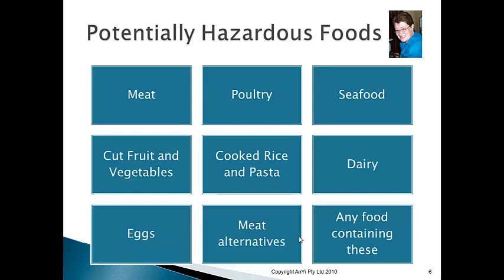We keep meat, poultry, and seafood as separate categories because different bacteria grow in different types. Poultry is closely linked with salmonella because the slaughtering process makes it more likely for salmonella and other bacteria to get into the meat compared to, say, slaughtering a cow. So poultry must be treated as its own group.